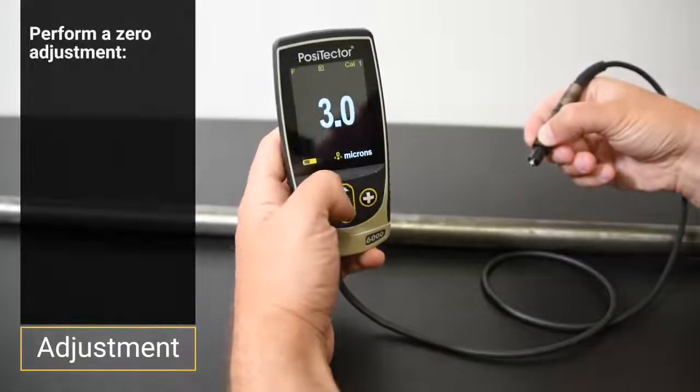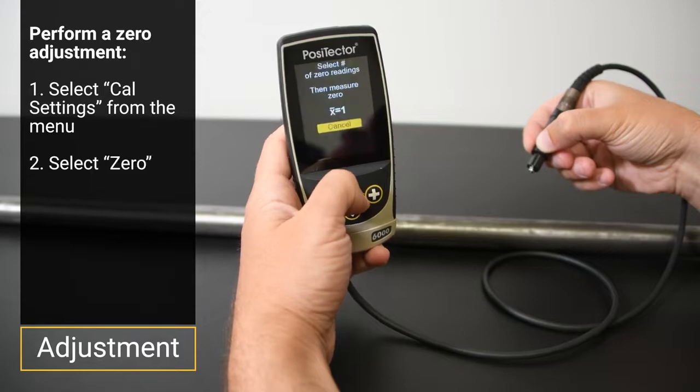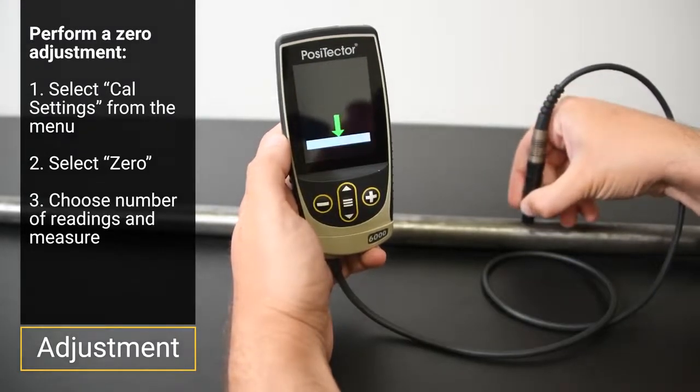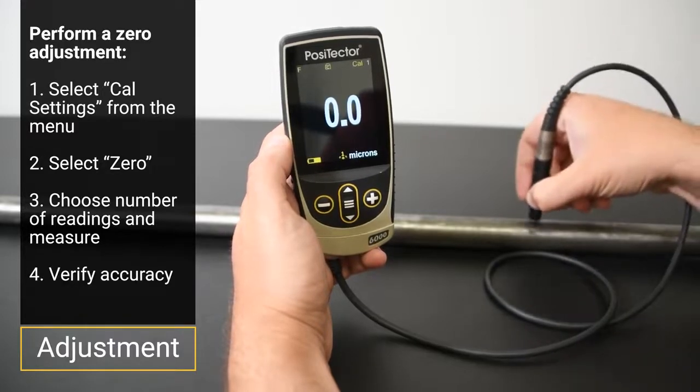To perform a zero adjustment with the PosiTector 6000, select Cal settings from the menu, then zero. Take one or more measurements by following the on-screen prompt. When completed, verify that the instrument measures within tolerance of zero.